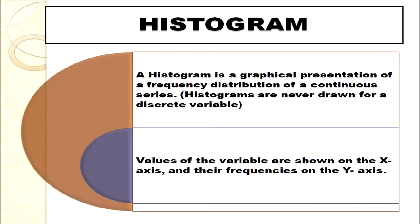We have learned one-variable and two-variable time series graphs. Now let's discuss histogram. A histogram is a graphical presentation of a frequency distribution. It can only be drawn for a frequency distribution, and it must be for a continuous series — meaning upper limit equals the next lower limit. Histograms can never be drawn for frequency arrays.